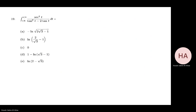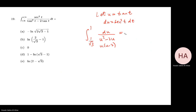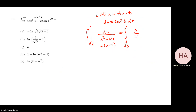In this part, let u = 10t, so du = sec²t dt. The limits become: at the lower bound it's 1, at the upper bound it's 1/√3. The integral becomes du over u(u² - 2u), which is du over u·(u - 2). Now apply partial fractions.